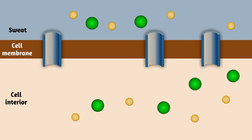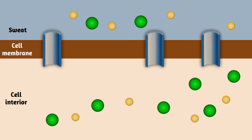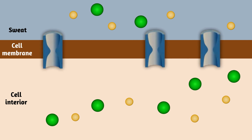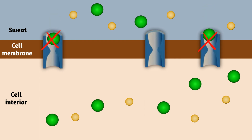This CFTR is also found in sweat glands where they play a reverse role. Here, they cause the movement of chloride ions inside the cell. However, in case of mutated CFTR, the entry of chloride ions into the cell is blocked, causing increased ions in sweat and hence salty sweat. This is also another very important symptom of cystic fibrosis.